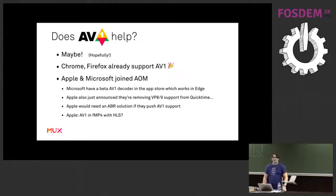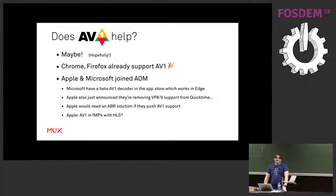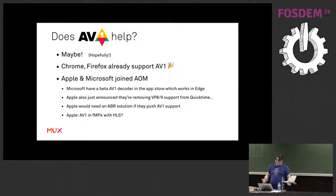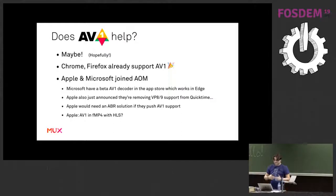There really hasn't been much AV1 chatter this year - last year it was everything. So does AV1 help with this? Maybe, hopefully. Chrome and Firefox have AV1 support now - Firefox's was literally one or two weeks ago, very very recent. And Apple and Microsoft have joined AOM, so technically we have everyone we need in AOM to hopefully do something. Microsoft actually has an AV1 decoder you can get on their App Store, which totally works in Edge.